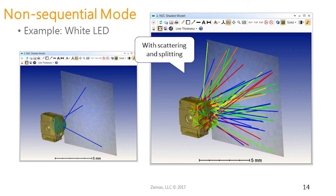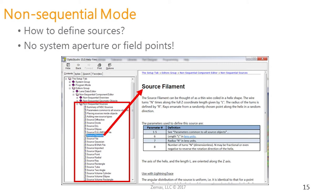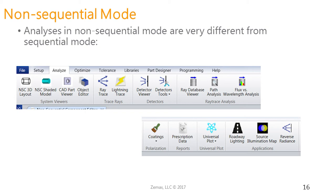In non-sequential mode, we don't have a system aperture or field points. Instead, sources are defined entirely by the source object. We have a variety of built-in objects — for example a source volume cylinder or a source filament — and you can also use source files that include real measured source data. In non-sequential mode, the analyses are very different from sequential mode because we no longer have systematic ray tracing. This is very powerful because rays can go anywhere in the system, allowing us to measure a realistic illumination pattern.